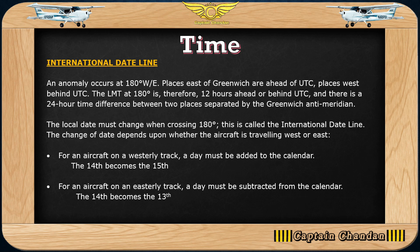Regarding the International Date Line: for an aircraft on a westerly track, a day must be added to the calendar — the 14th becomes the 15th. For an aircraft on an easterly track, a day must be subtracted — the 14th becomes the 13th. This applies when passing the anti-meridian, where the date changes.